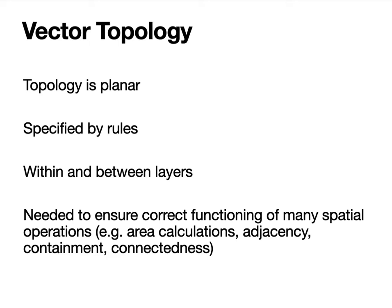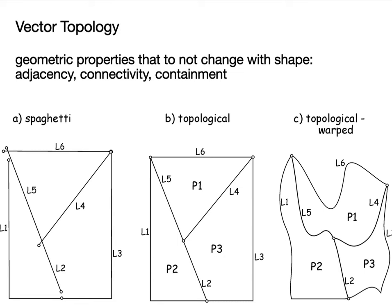Some operations require we have planar topology, particularly for polygons or networks of lines that meet certain specified rules. Topology refers to geometric properties that we force on our data layers so that things work well. If we don't ensure that line ends meet where intended, there are no gaps or overshoots, and we have complete coverage — no gaps or overlaps between adjacent polygons or full connectedness in a network — then adjacencies, connectivities, and containments all maintain truth across any warpings.